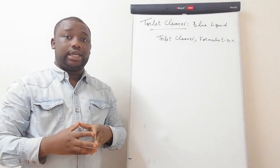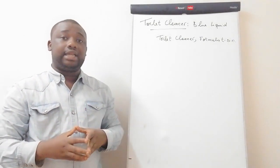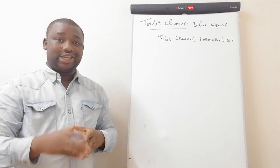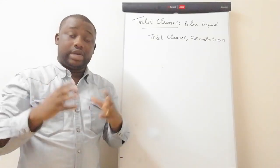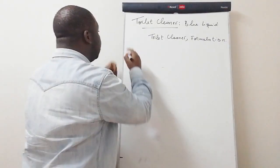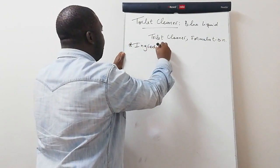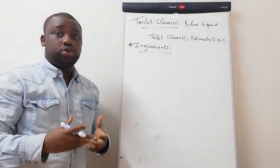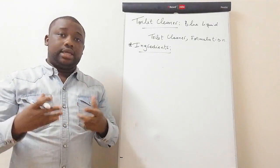So what am I going to show you in this video? As I said, I'm going to show you how to manufacture the blue liquid toilet cleaner. We'll first state the ingredients, then I'll show you the sequence in which to mix them and the related amount of each. What are the ingredients you need to produce the blue liquid toilet cleaner? The ingredients are water, the blue dye, perfume, hydrochloric acid, and the acid thickener.